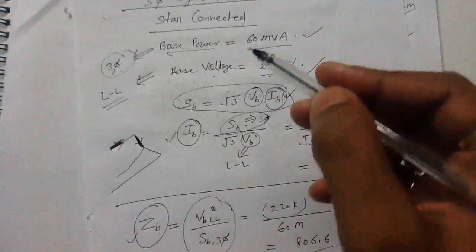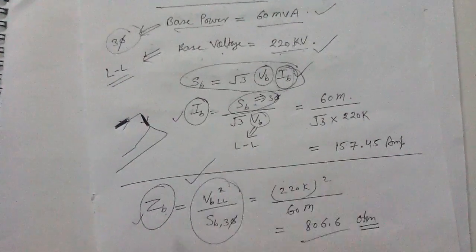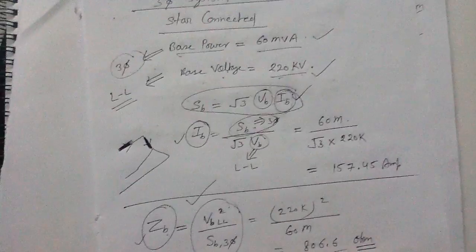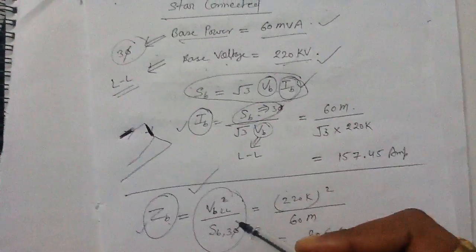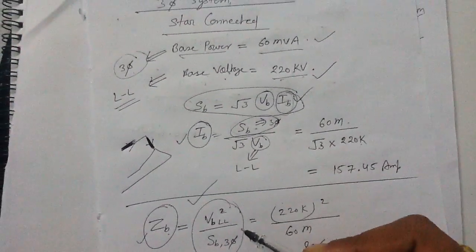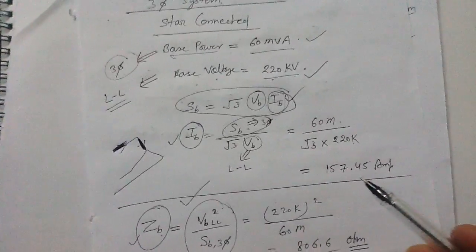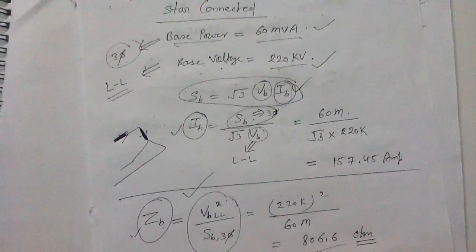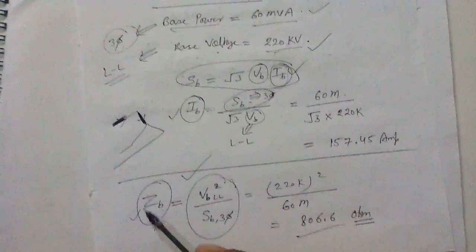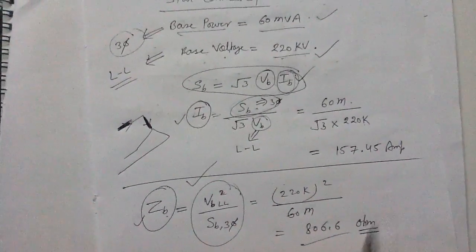This formula for finding the base impedance in the case of a star-connected system is correct. But if you use this formula directly in the Delta-connected three-phase system to find out the base impedance, it will become wrong. So you have to remember that and be careful.